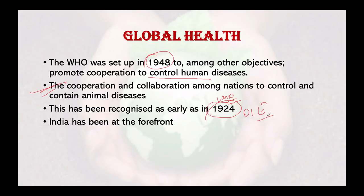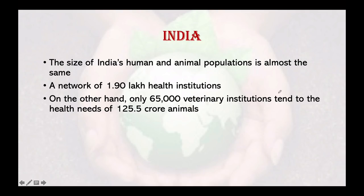This cooperation has been recognized since 1924 when OIE was established to fight animal diseases at the global level. India has been at the forefront of both these apex bodies, partly because India has a large and very poor population for whom outbreaks of such diseases can seriously harm people's health and ultimately the economy.